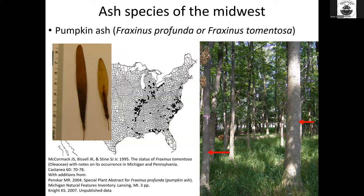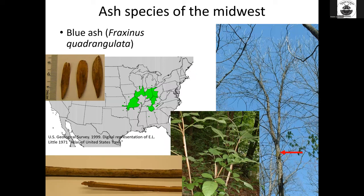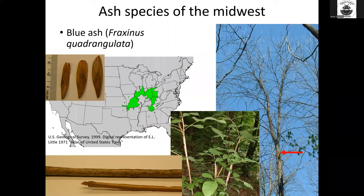The samaras of the pumpkin ash are distinctive, and that's what I use to distinguish that species from green ash. And then finally, blue ash — this is a cool species. It has stems that are winged like a euonymus, with four-angled wings on the twigs. It has a very restricted native range in the Midwest and typically inhabits areas with high calcium soils. We see it here in Ohio in places that have limestone cliffs.